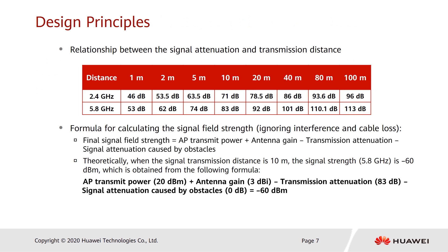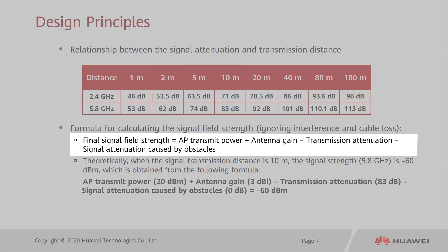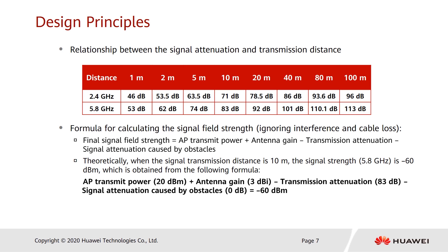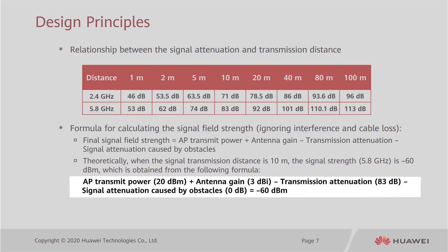These coverage parameter values are determined by the final signal field strength — greater than or equal to minus 65 dBm. It is calculated as follows: AP transmit power plus antenna gain, minus transmission attenuation and signal attenuation caused by obstacles. The transmit power has a maximum value and can be set as needed. After an antenna is selected, the antenna gain is fixed. The transmission attenuation of 2.4 GHz and 5.8 GHz signals increases with distance, and at the same distance, 5.8 GHz attenuation is greater than 2.4 GHz.